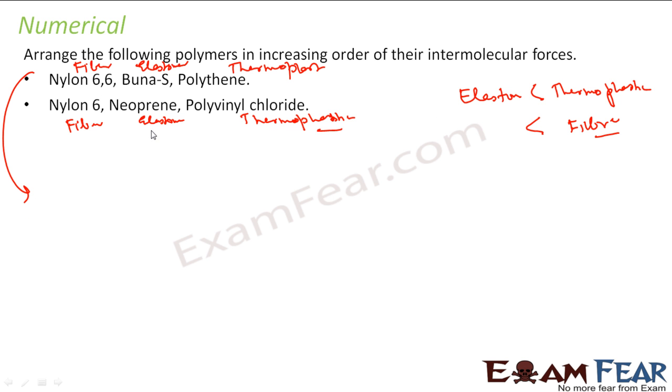In the first case, elastomer which is BUNA-S, so it will be BUNA-S, and then thermoplastic, polyethene, and then fiber, that is Nylon 66. In the second case again, the least is elastomer, that is neoprene, and then thermoplastic, that is PVC, and then fiber, that is Nylon 66.